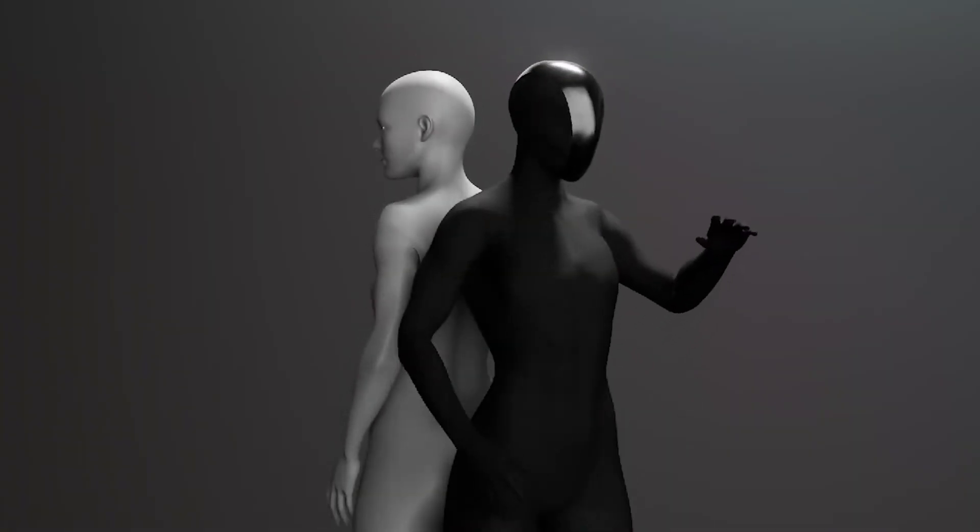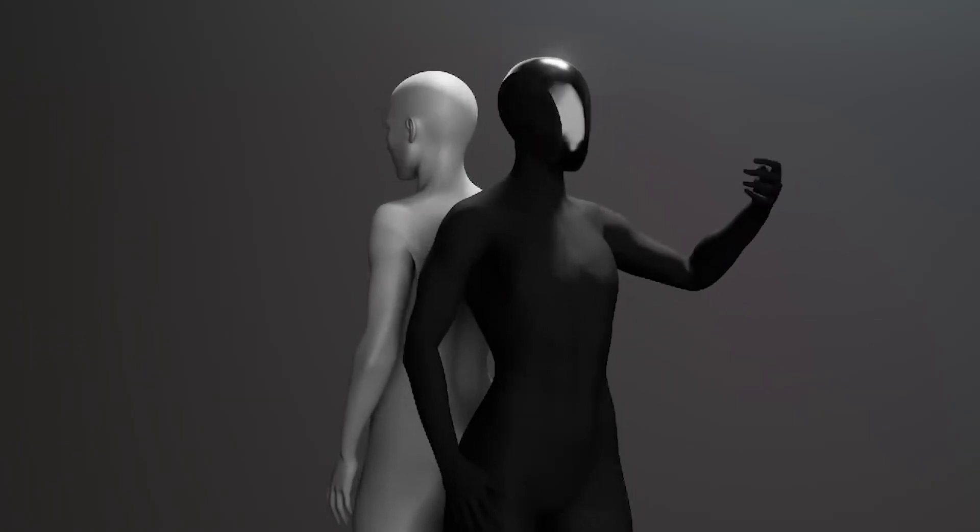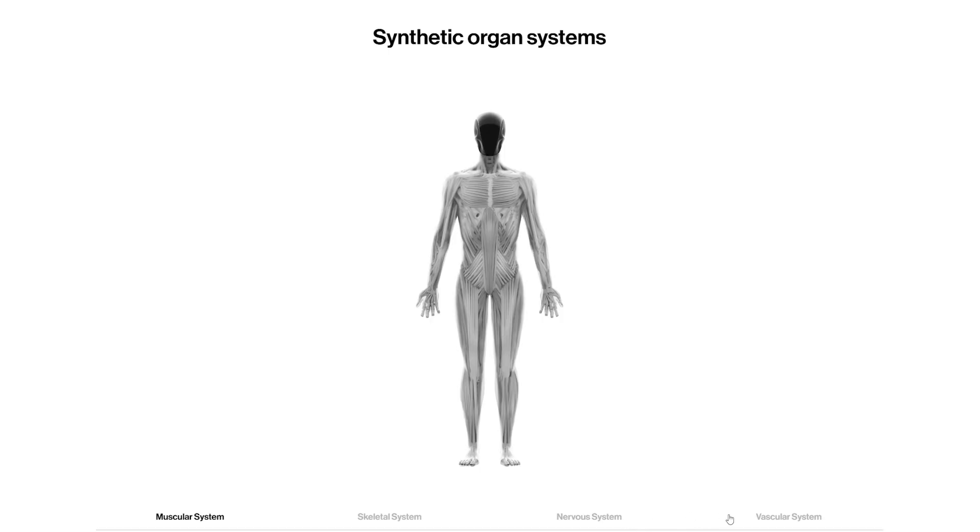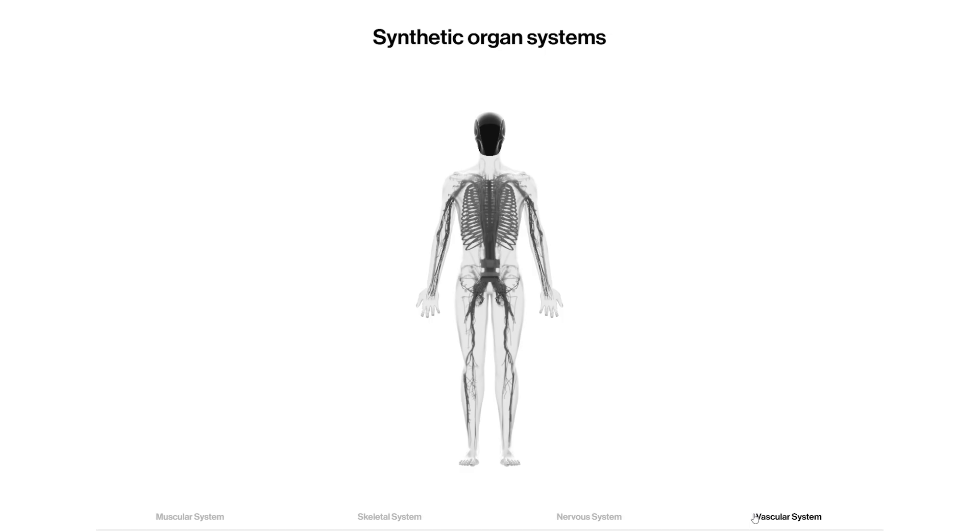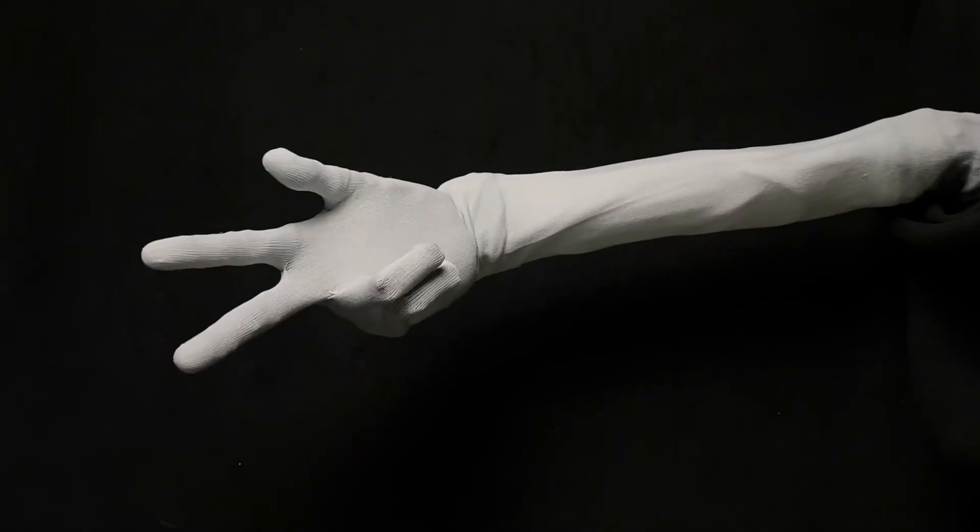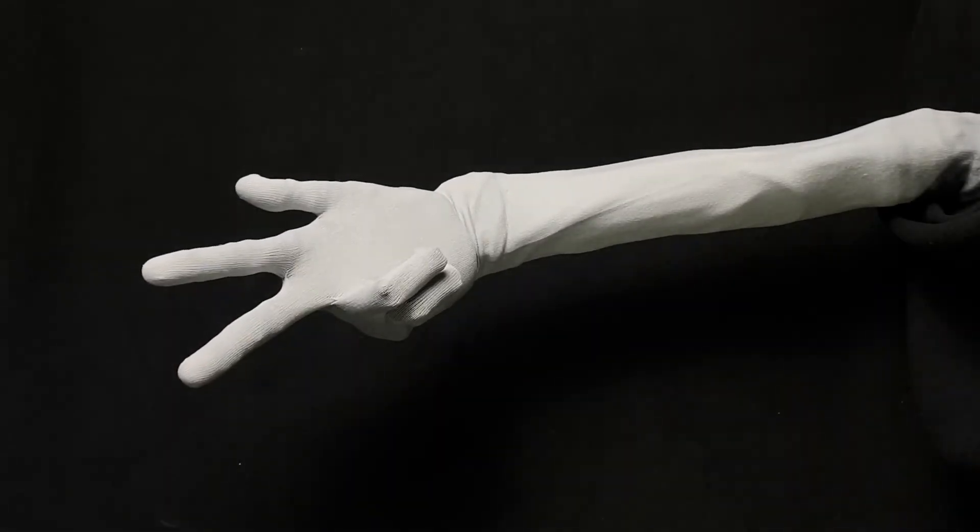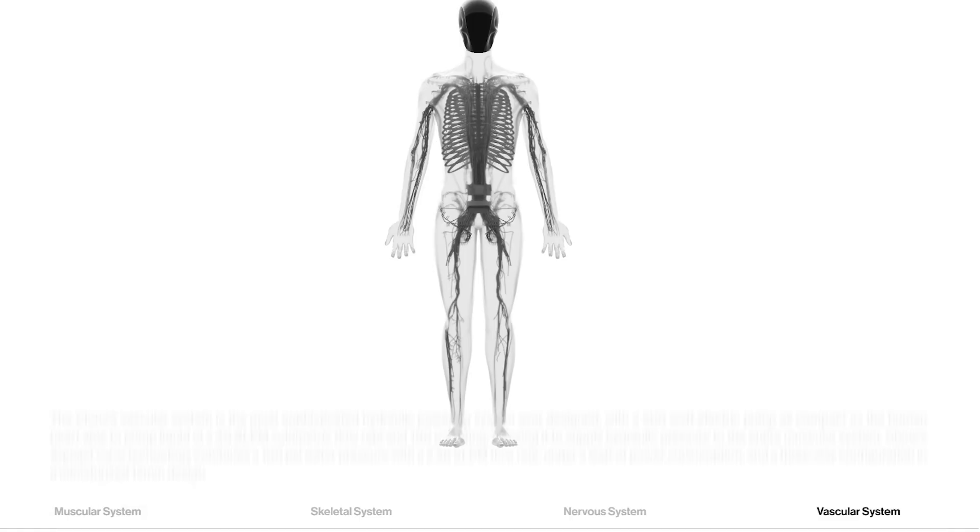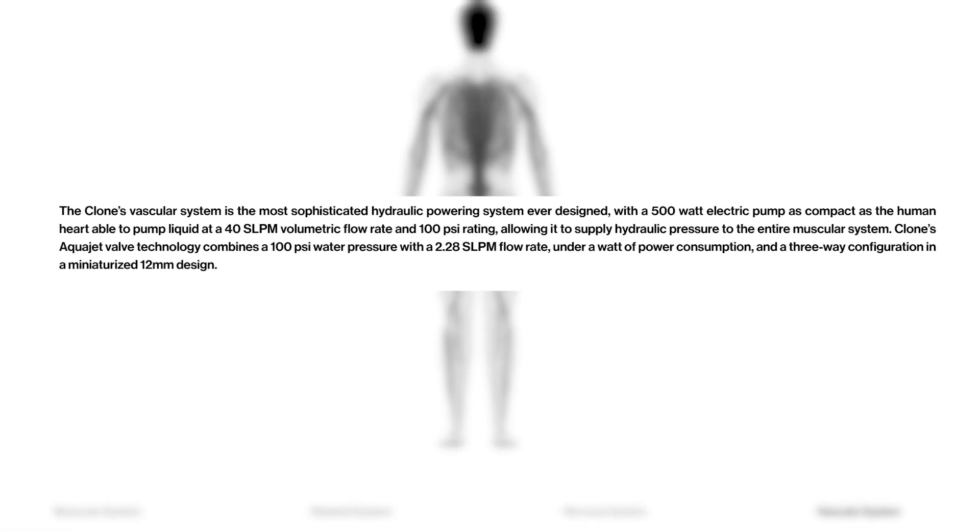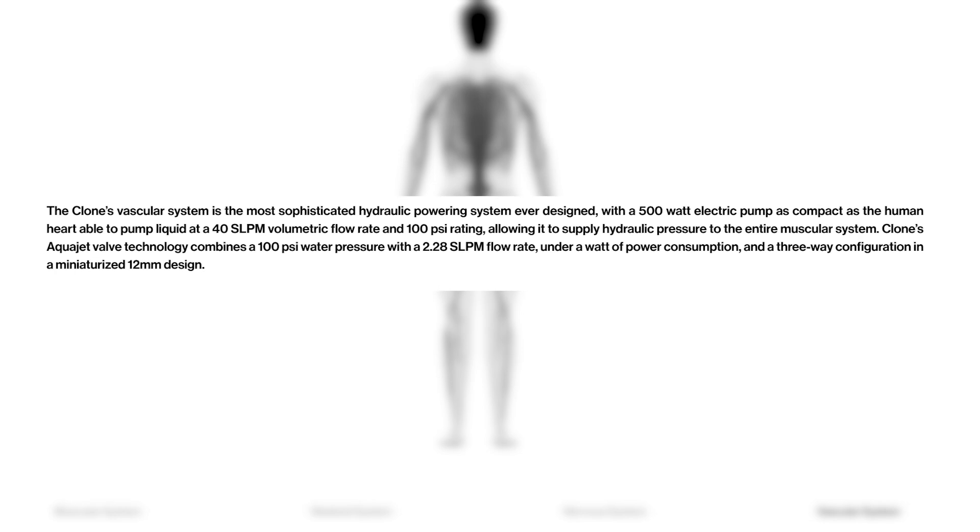Powering this muscle system is a compact hydraulic pump that functions much like a human heart. It circulates fluid through the robot's vascular system, delivering the pressure needed for muscle contractions. The pump is remarkably efficient, operating at 500 watts while delivering 40 liters per minute of hydraulic fluid at 100 psi.